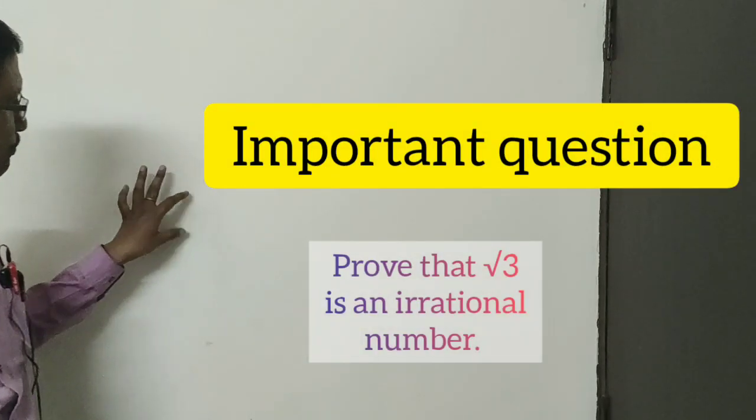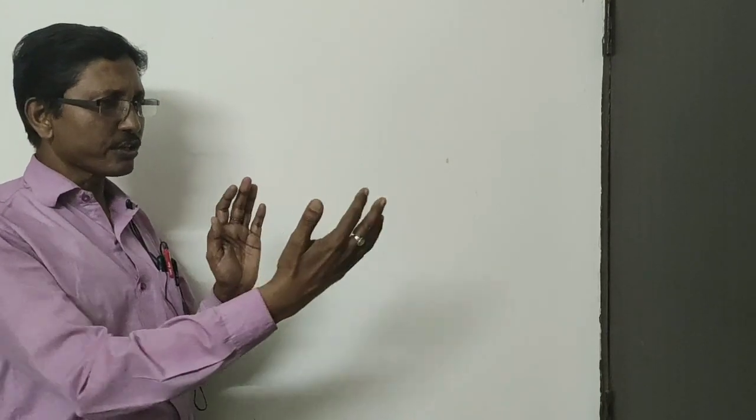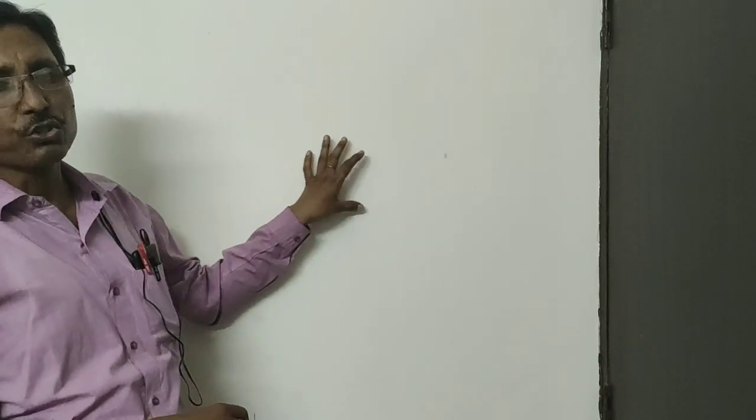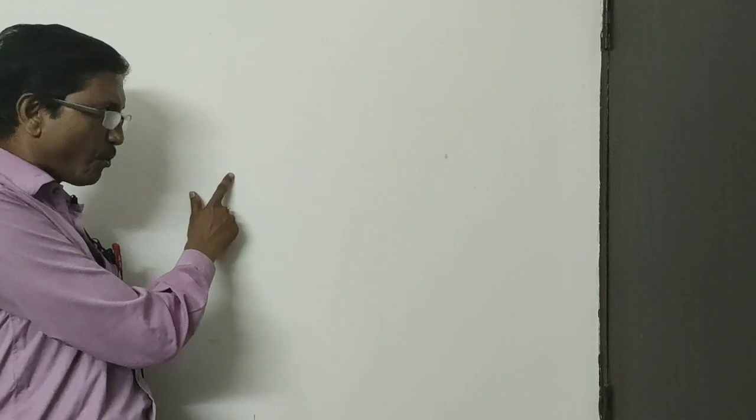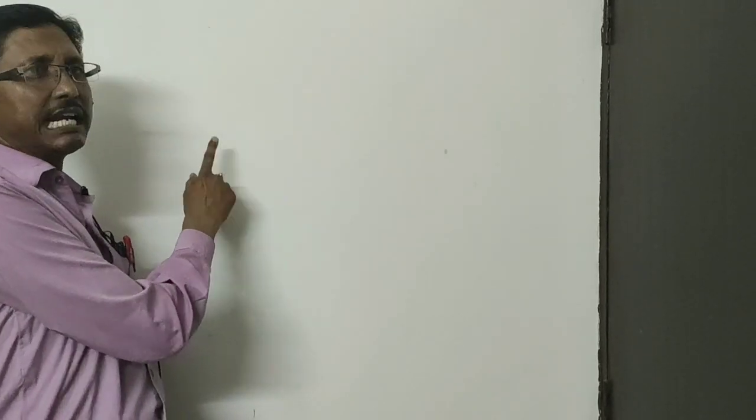Now, an important type of question — proving a number is irrational — often appears in exams. We will prove that √3 is an irrational number. For such proofs, we use the contradiction method: we assume the opposite of what we want to prove, derive a result, and show it leads to a contradiction.